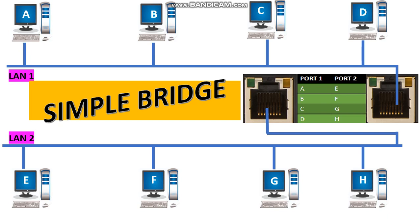First, I will explain simple bridge with the help of an example. Let us assume that there is a LAN — that is, local area network — in a school building called LAN1. Let us assume that you expanded your school building and there is another LAN called LAN2 in the second school building. If we use a bridge to connect these two LANs, then it is called a simple bridge.